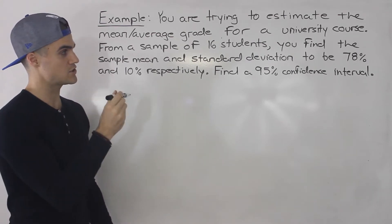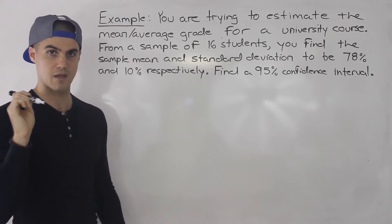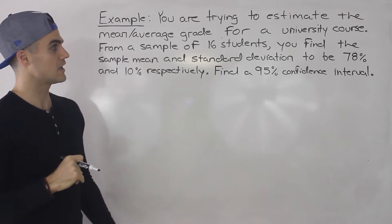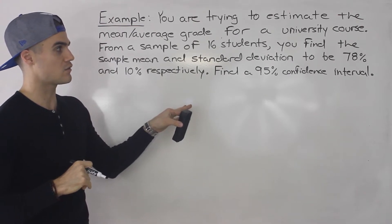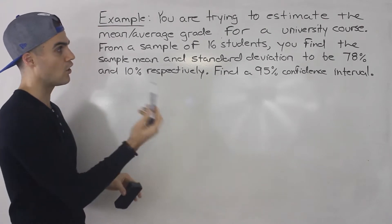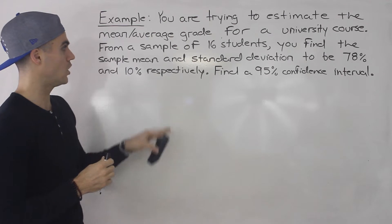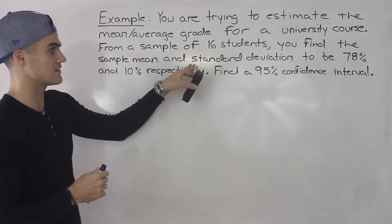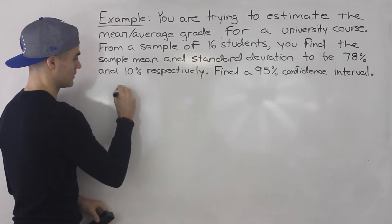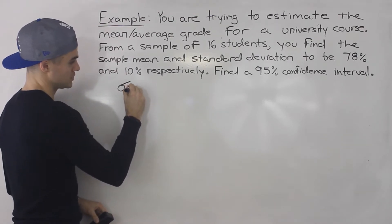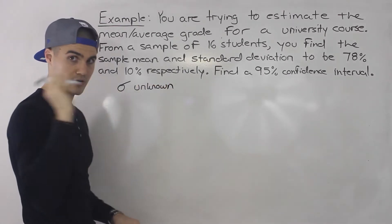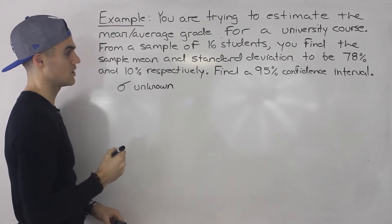Now notice how this question is pretty much almost exactly the same as the previous question that we did, but there's one key difference. In this question, we're not given the population standard deviation — the standard deviation for all students taking the university course. All we're given is the sample mean and the sample standard deviation. So this is a case where the population standard deviation is unknown. The previous question it was known; in this question it is unknown.